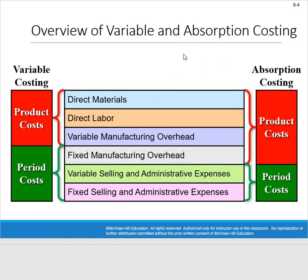Quick overview: variable versus absorption. Under variable costing, our product cost is direct materials, direct labor, and variable manufacturing overhead. Our period costs — expensed in the period incurred — are fixed manufacturing overhead, variable selling and admin, and fixed selling and admin. When it comes to manufacturing overhead, that's really where the difference is between these two methods. How we treat fixed manufacturing overhead is really the crux of the matter.